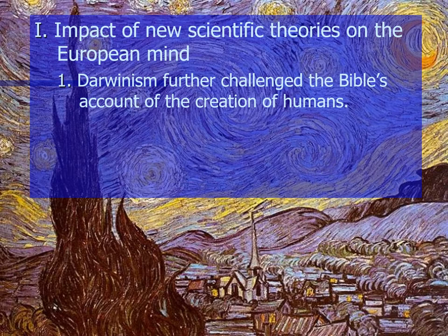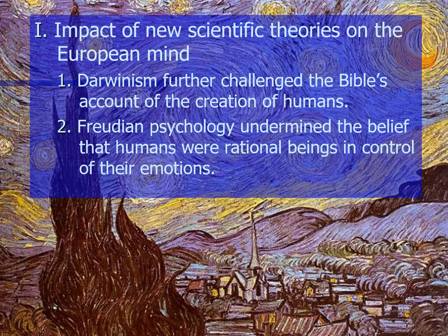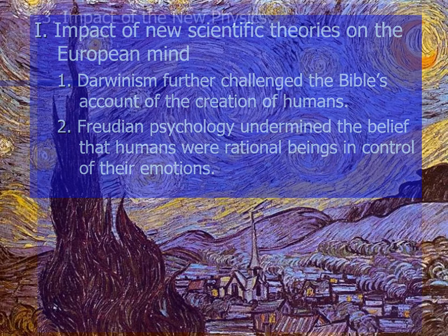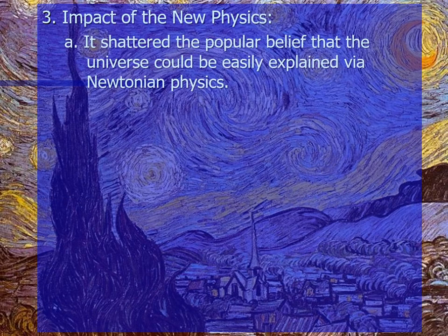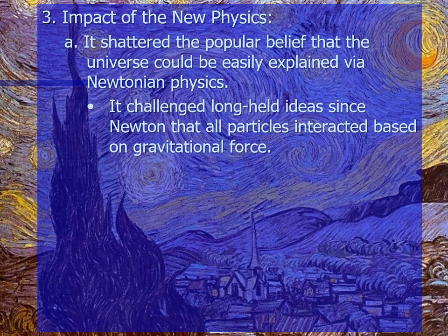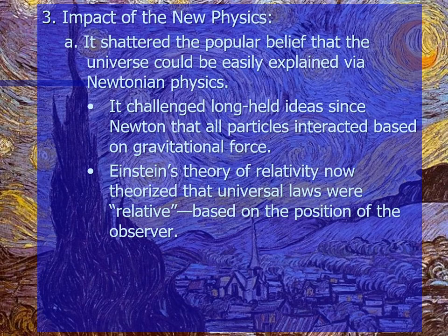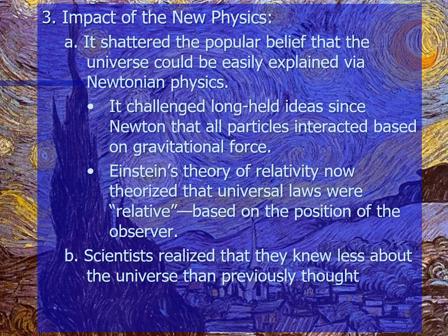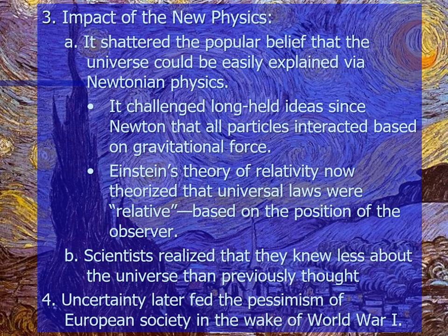Darwinism further challenged the Bible's account of the creation of humans. Freudian psychology undermined the belief that humans were rational beings in control of their emotions. The impact of the new physics was even more vast — it shattered the popular belief that the universe could be easily explained via Newtonian physics. Einstein's theory of relativity theorized that universal laws were relative rather than constant, depending on the position of the observer. Scientists realized they knew less about the universe than they had previously thought, and this uncertainty later fed the pessimism of European society in the wake of World War I.